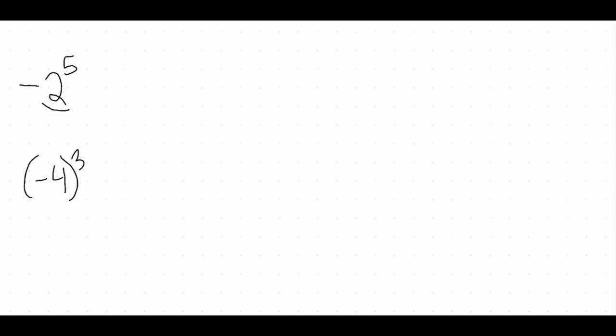Our exponent is that little number right up there — our exponent would be the five. Now if we were asked to evaluate this, I definitely recommend expanding this out and actually writing out the multiplication. That negative out in front we just need to rewrite — that negative is going to stay there. But what's important is that that exponent, that five, only goes to the two. That five does not go to the negative.